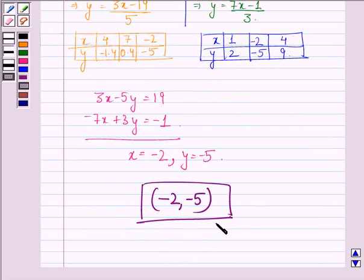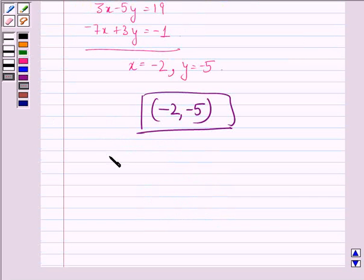The question says, does the point 4, 9 lie on any of the lines? So, on the line 3y minus 7x plus 1 equal to 0.